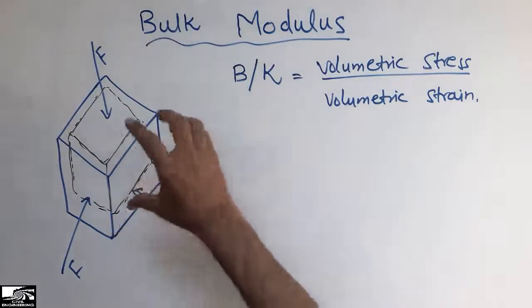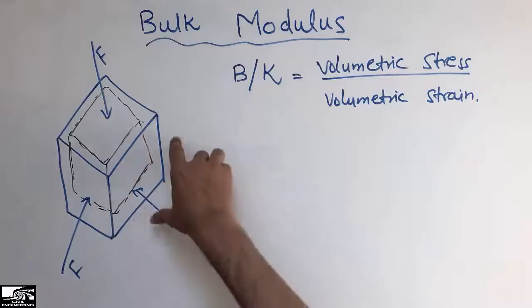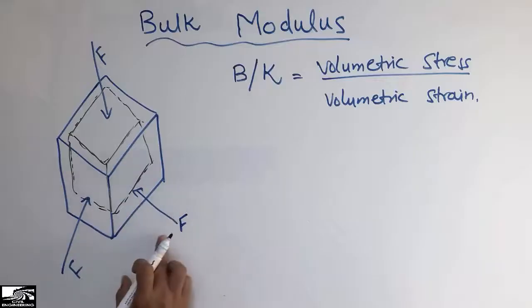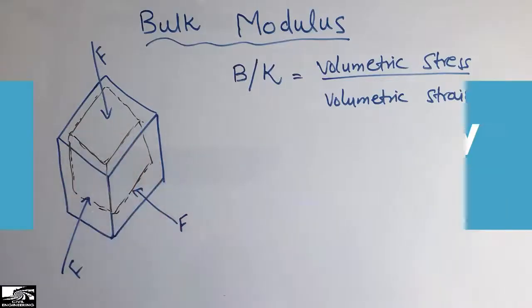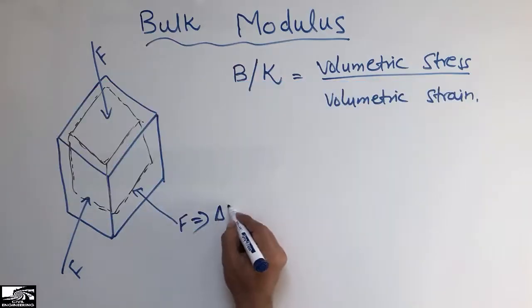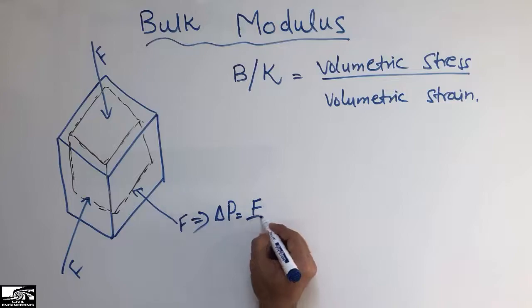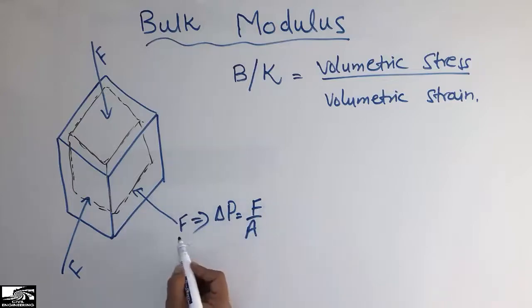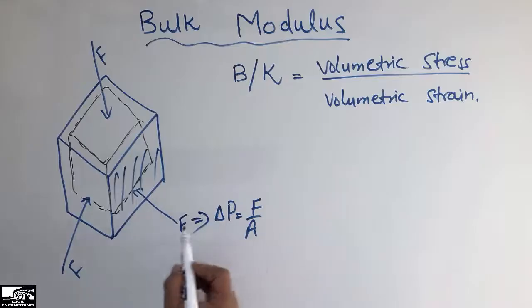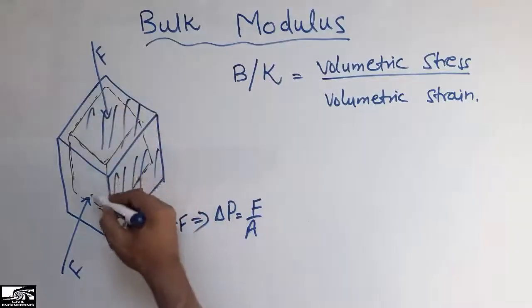We can see here that there is a decrease in the volume of this cube. Now let's consider that the force F is acting in different directions. This makes the volumetric stress acting on this object. The stress will be delta P equal to the force over area, because the force is acting on this area. We can call it that the stress will be force per unit area.